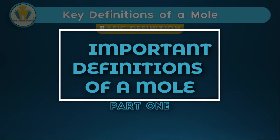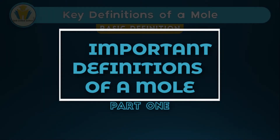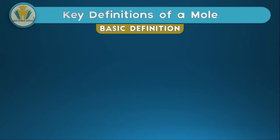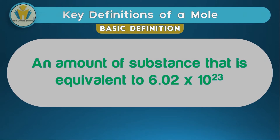Let's begin with looking at the key definitions of a mole. The first is what I like to refer to as the basic definition of a mole, because this definition actually tells us the number to which a mole is equal to. A mole is an amount of substance that is equivalent to 6.02 times 10 to the power 23.